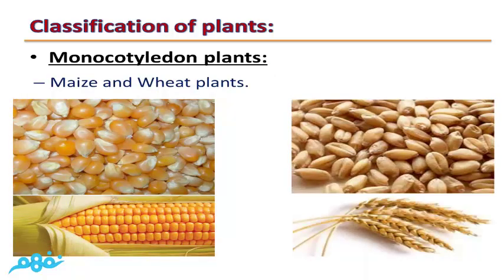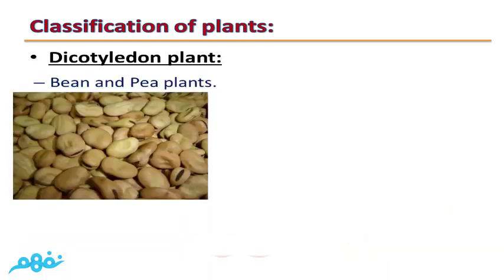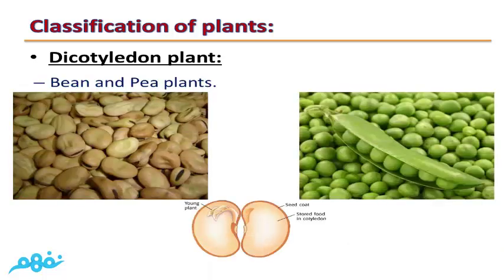Monocotyledon plants, such as maize and wheat plants — as you can see, their seeds are monocotyledon. Dicotyledon plants, such as bean and pea plants, have seeds that are dicotyledon and can split into two halves.